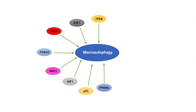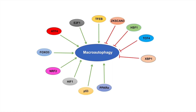Hey everyone. In the last lesson we talked about the transcriptional activation of macroautophagy, but in this lesson we're going to talk about how transcriptional regulation can lead to a suppression or decreased macroautophagy function. We're going to cover several transcriptional repressors including ZAXSCAN3, HSF1 or heat shock factor 1, TCF4, XBP1, FXR, and nuclear factor kappa B or NF-κB.